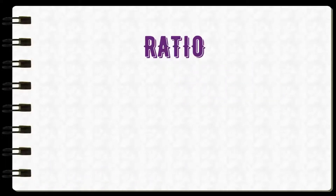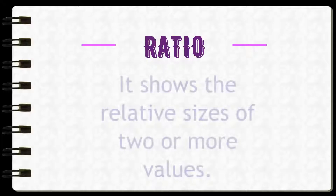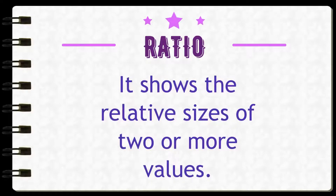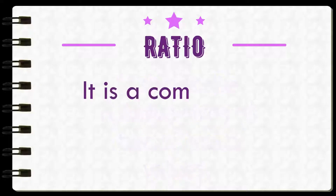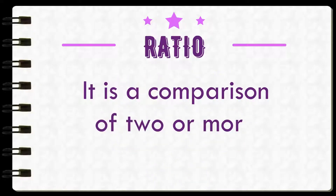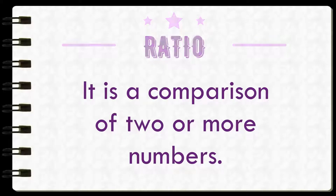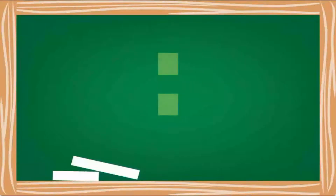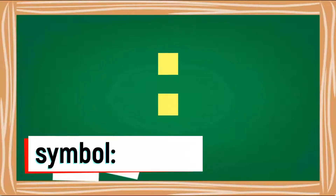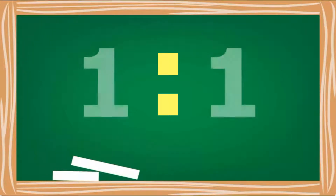A ratio shows the relative sizes of two or more values. In other words, it is a comparison of two or more numbers. Let's take a look at this symbol — a colon. It is the usual and most common symbol used to indicate ratio.